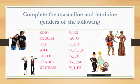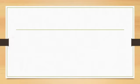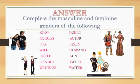Let us now look at the answers: King — Queen. Actress — Actor. Fox — Vixen. Wife — Husband. Gander — Goose.